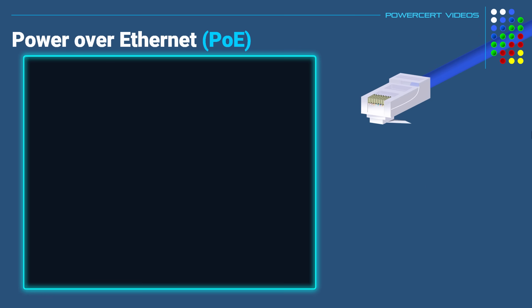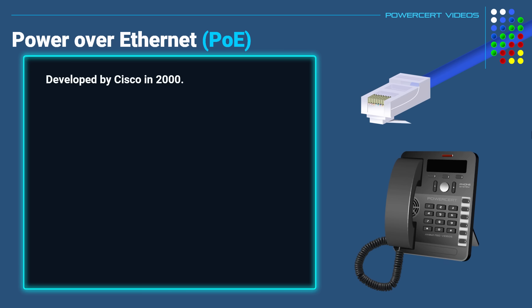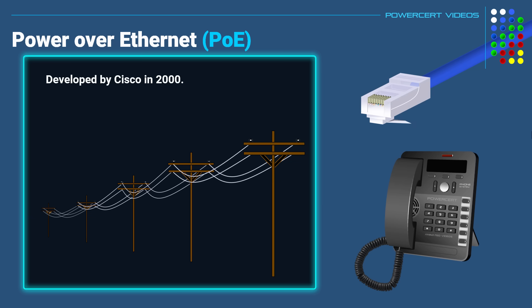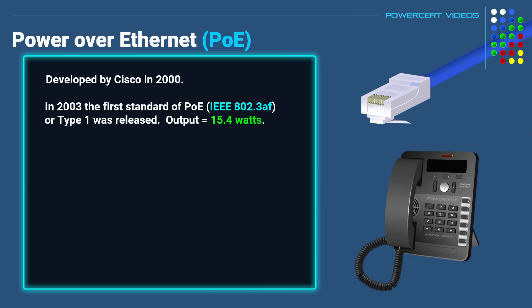Power over ethernet was first developed by Cisco in the year 2000, as a mechanism to deliver power and data to their IP phones, similar to how basic landline phones get power using regular telephone lines. In 2003, the first standardized version of PoE — the IEEE 802.3af, also known as Type 1 — was released. This standard had a power output of 15.4 watts, which was enough to power certain devices at that time.